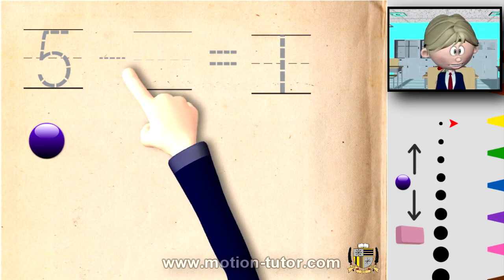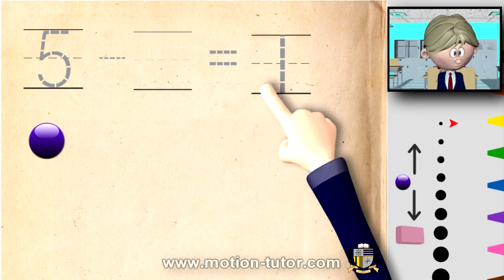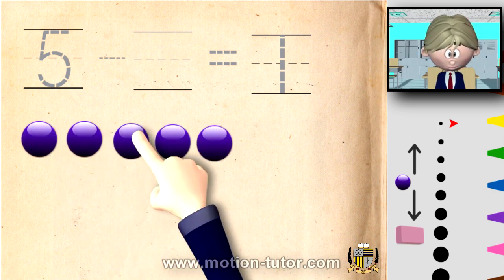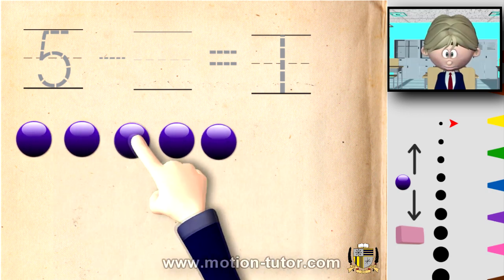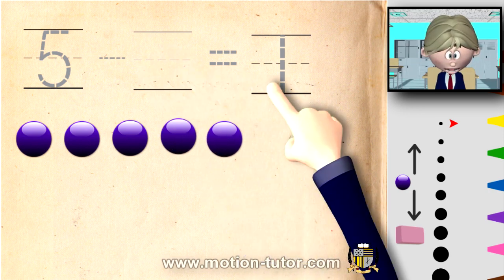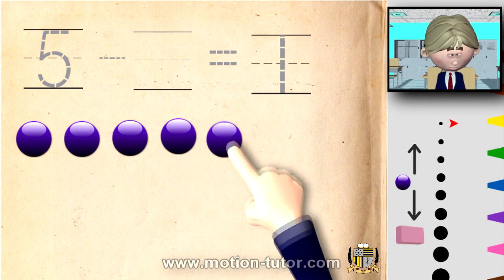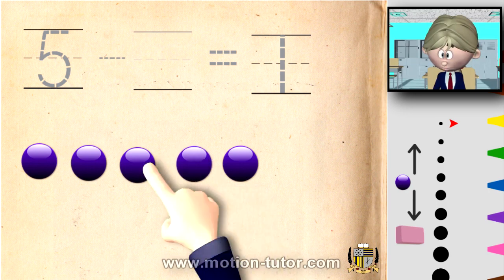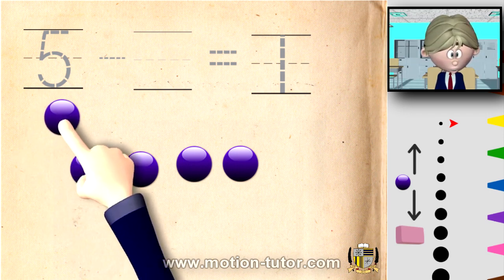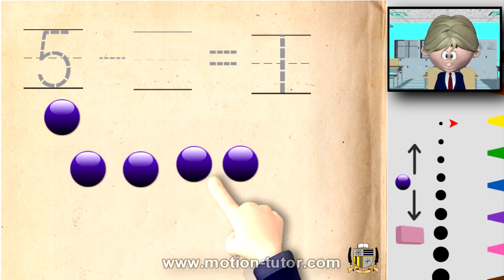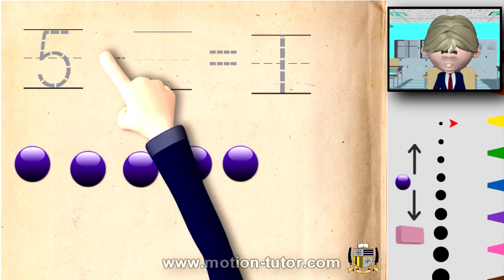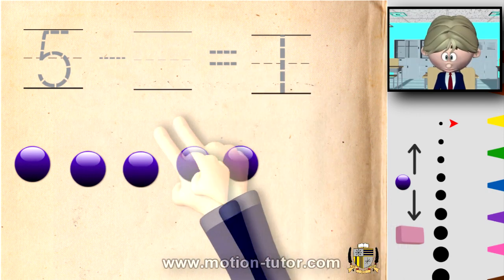Let's try another example: five take away some number equal to one. So five take away some number is equal to one. We have one, two, three, four, five marbles, and we're going to take away some number to be left with one. I can see I'm going to have to take away these to have one left over, just like the answer says.